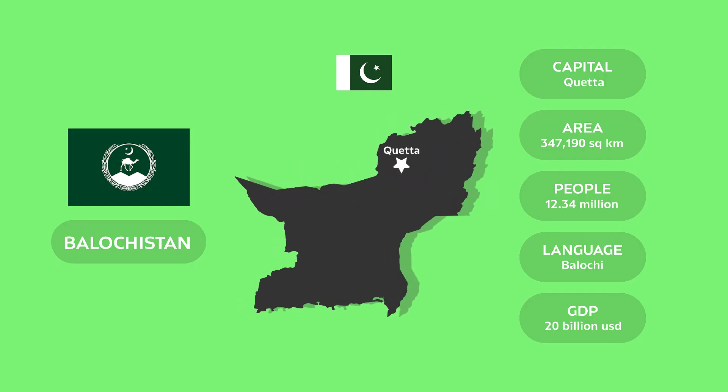Lastly, we have Balochistan. The capital of Balochistan is Quetta. Quetta is known as the fruit basket of Pakistan. Balochistan is the largest province of Pakistan in terms of land area and has the lowest population in Pakistan. People speak Balochi in Balochistan. Balochistan's GDP is $20 billion USD.